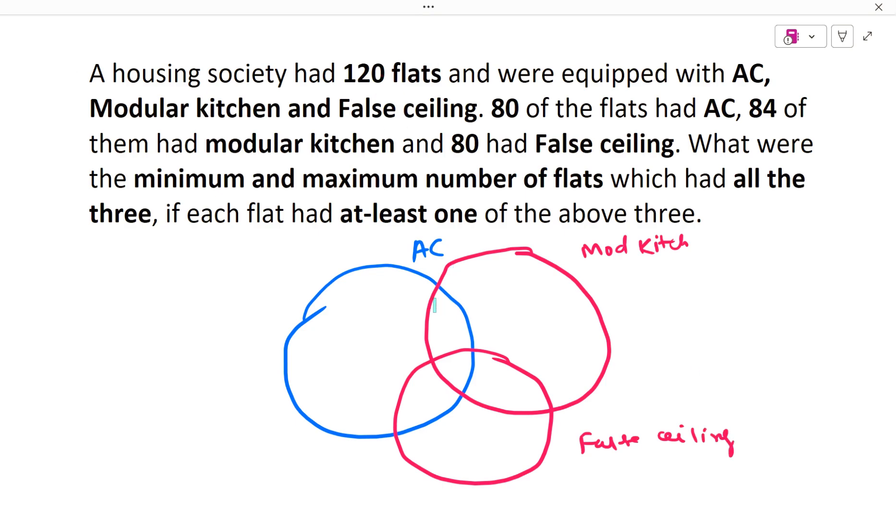Now, I am taking a few areas as different. So this is my exactly two areas like AC plus modular kitchen, AC plus false ceiling. These are exactly two areas. And then I have an area called exactly three. So this area is exactly three area. And the others which are left are exactly one area. So suppose this is exactly one, A, B, and C.